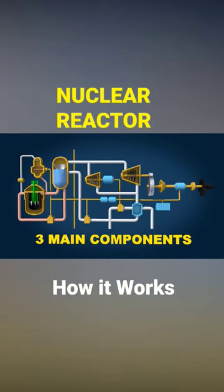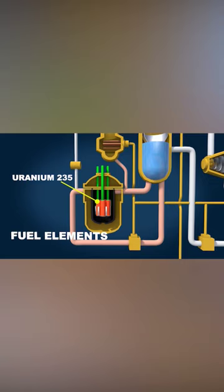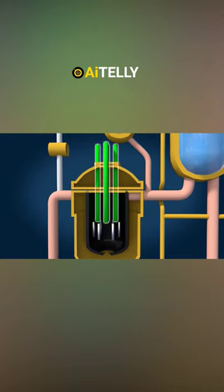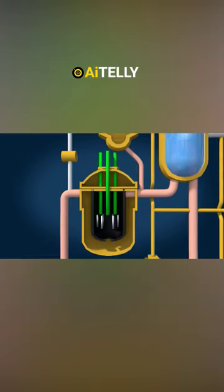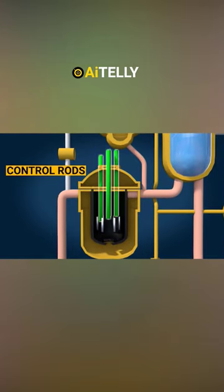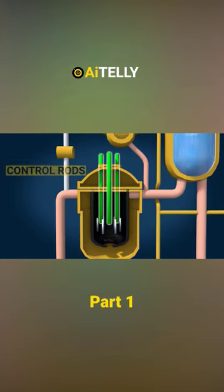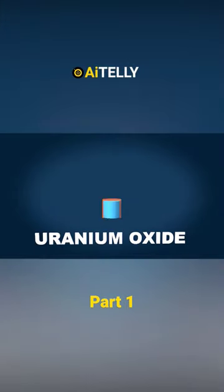A nuclear reactor consists of three crucial components. One: fuel elements, which could be uranium-235 or uranium-238. These rods vary in number according to the size of the reactor. Two: a moderator, which can be water. Three: control rods, whose main function is to absorb any excess neutrons in the moderator. Let's see how it works. Uranium oxide is compressed into fuel parts.